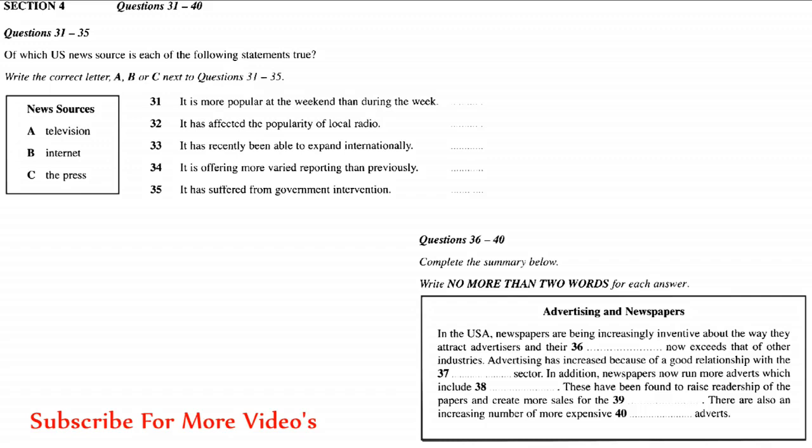Now, one very critical factor in keeping newspapers alive and well in the USA has been their approach to advertising. Obviously, newspapers are heavily dependent on advertising revenue, and they have become more and more imaginative in what they offer in order to make sure that advertisers use them and not other news sources. This has meant that, contrary to popular belief, newspapers now have a significantly higher profit margin than the rest of American industry. So, how have they managed to raise advertising revenue in this way? Well, they have put a lot of effort into developing and maintaining a very strong association with the retail trade. And they've come up with a winner.